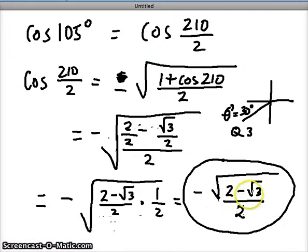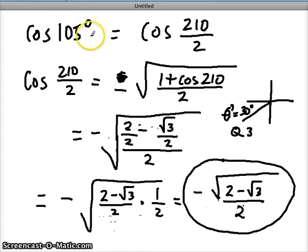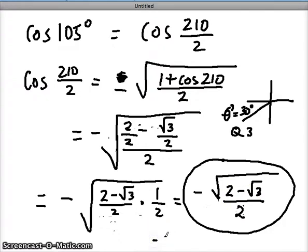If you turn it into a decimal on your calculator, it should be equivalent to what your calculator gives for the cosine of 105 degrees. On the calculator, this becomes approximately negative 0.26. And if you actually find the cosine of 105 on your calculator, it should be the same. So there is a way you can check your math and make sure you get the correct answer.